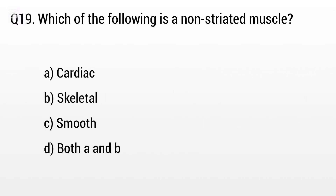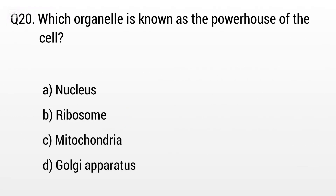Question 19. Which of the following is a non-striated muscle? Option A: Cardiac, B: Skeletal, C: Smooth, D: Both A and B. The right answer is option C, Smooth muscles.